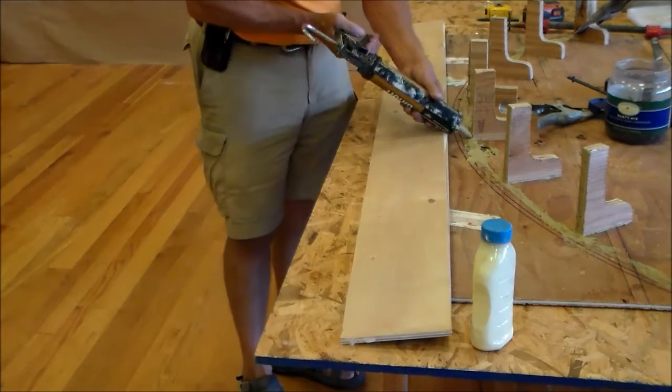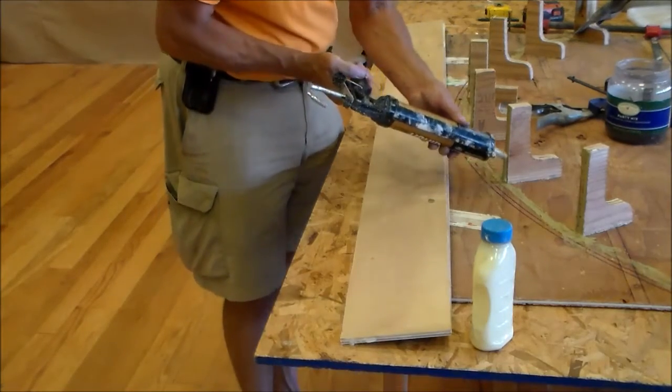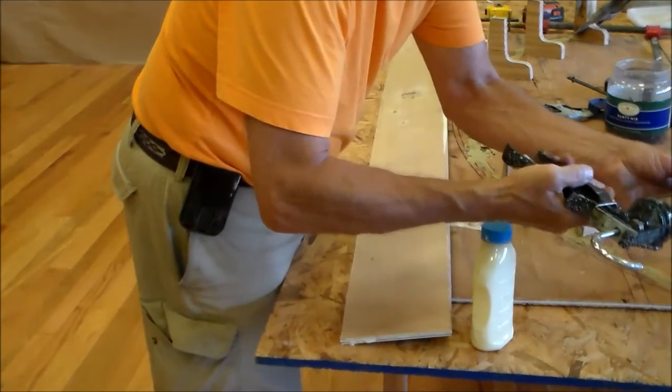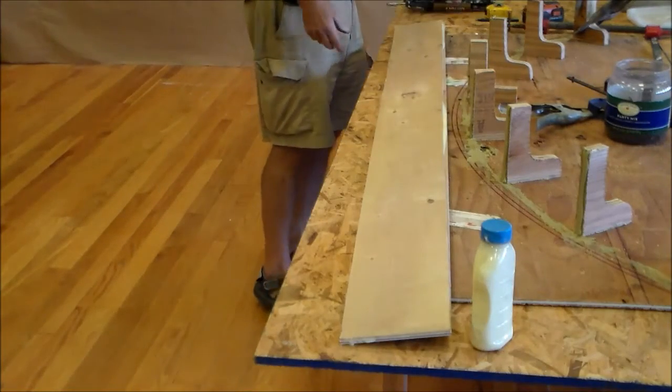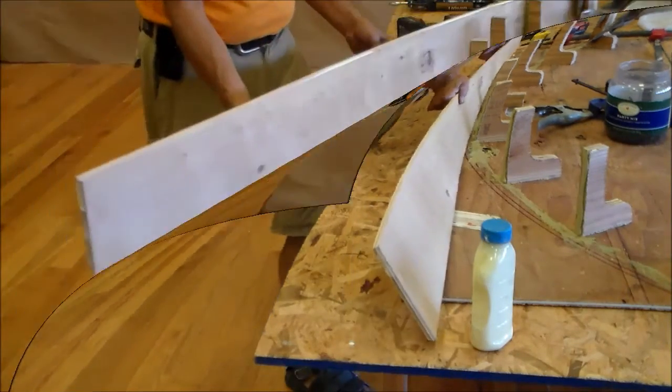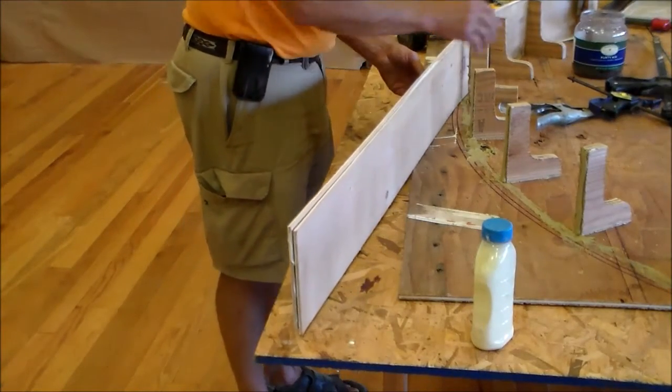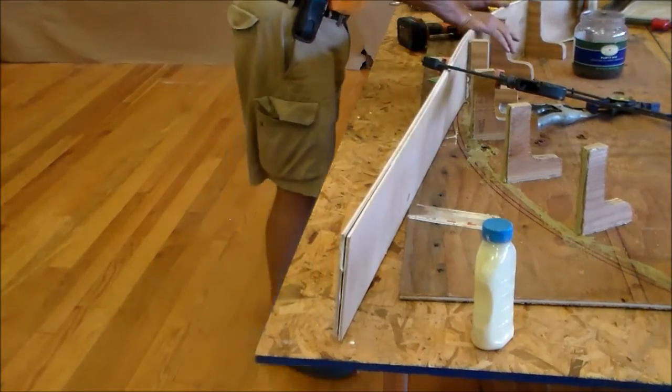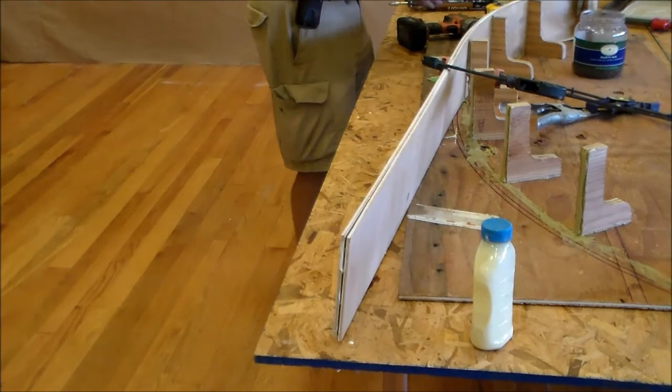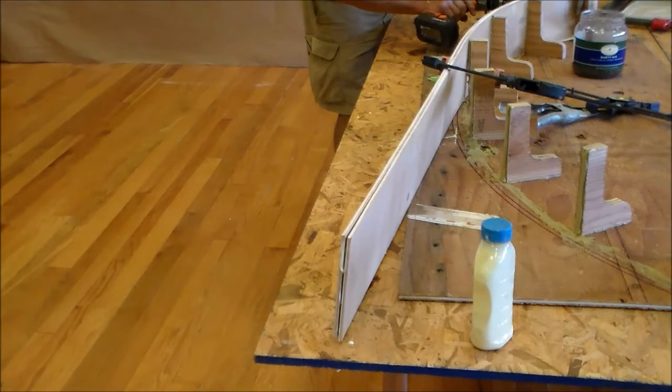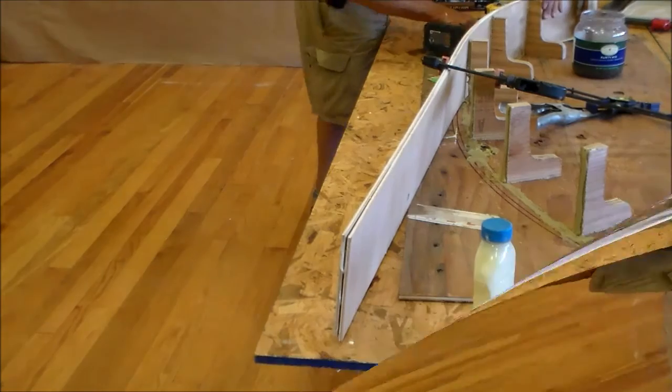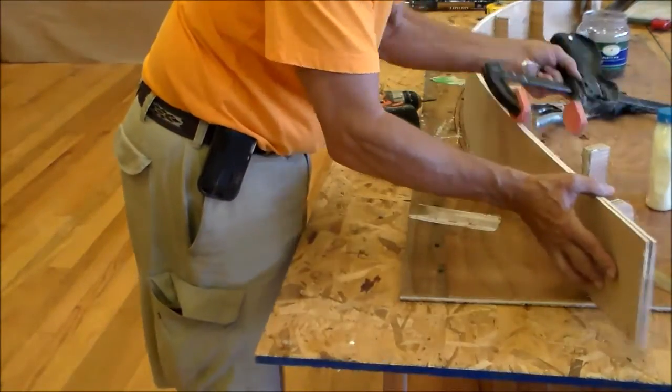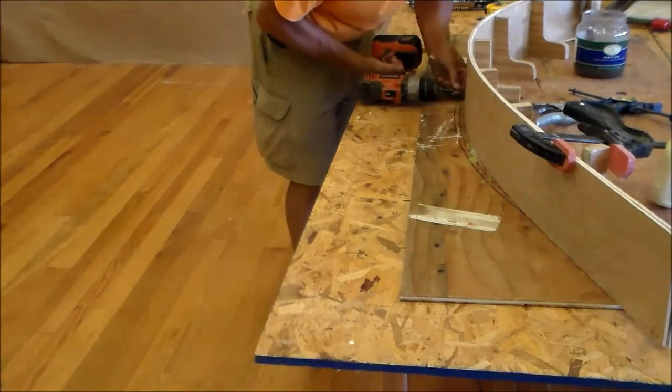Use construction adhesive on each of these support brackets. Start attaching this laminated plywood at one end and work progressively down to the other end, allowing the top sheet of plywood to slide slightly over the underside one. Secure the plywood to each support bracket with two screws.